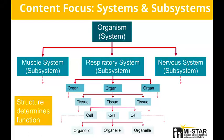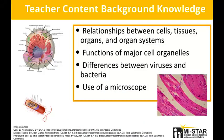This unit is built around the concept of biological systems and subsystems based on structure and function. In other words, the unit emphasizes how organisms are comprised of multiple interacting subsystems whose functions are determined by their structure. Modeling these systems and subsystems is a major focus. Teachers need to understand the interactions of cells, tissues, organs, and organ systems at their various scales. You should also be aware of major cell organelles like the nucleus, mitochondria, and cell membrane, the differences between viruses and bacteria, as well as basic microscope use. If you are not confident about your knowledge of these topics, review the teacher background content resources listed under the unit content resources in the MyStar portal and in the lesson plans.